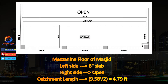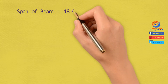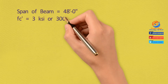This is mezzanine floor framing of a masjid. I take this beam size of 24x36. UDL load will act on this beam only from one side; another side of beam has no slab, so catchment length on beam is half of length 9.58 feet, that is 4.79 feet. Now let's first calculate which and how much load is acting on this beam as UDL. I have span of beam as 48 feet.